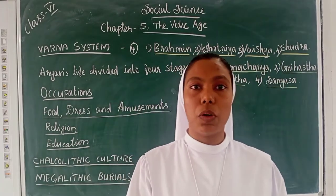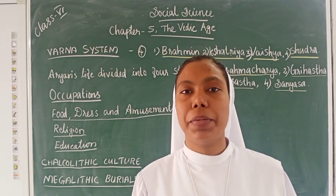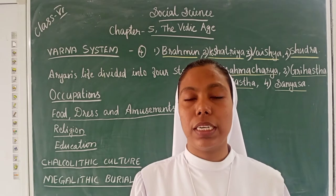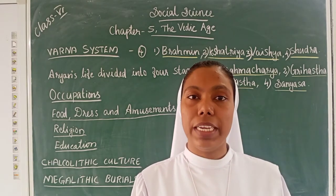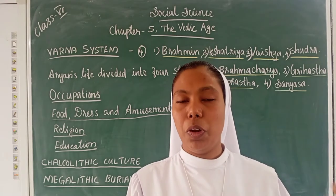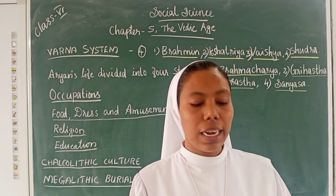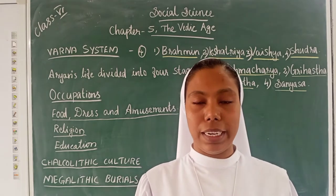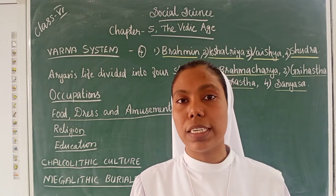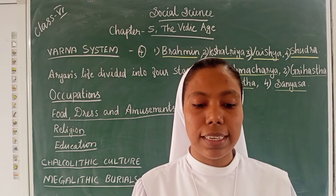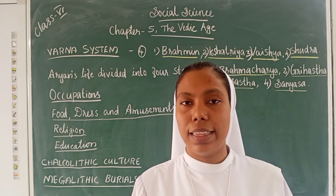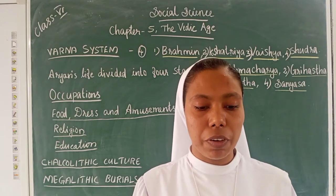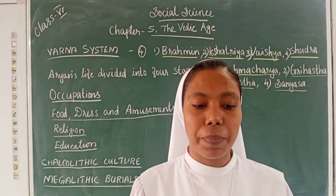Next let us discuss the occupations of the Aryan people. The main important occupation was agriculture. They grew wheat, barley, and millet. Hunting and cattle breeding also remained important occupations. They hunted wild buffalos, bears, and other animals for their meat and skin. Bulls were used for ploughing fields and drawing carts.